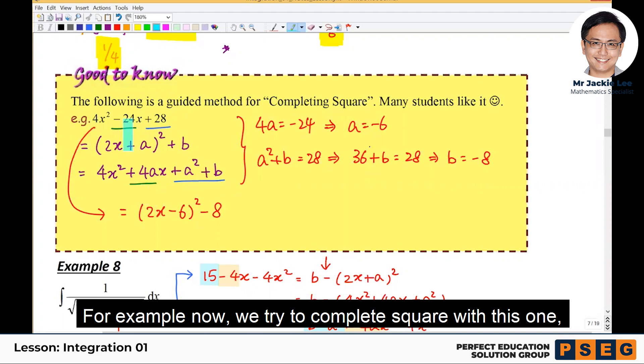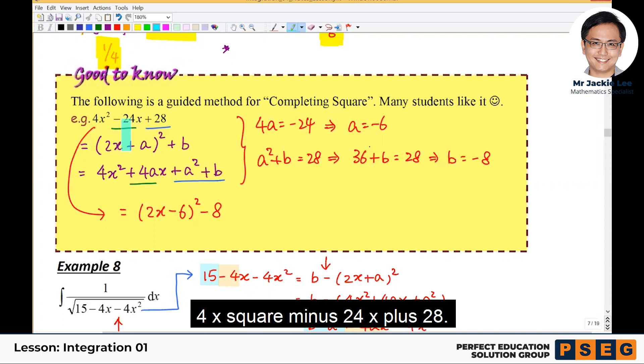For example, now we try to complete the square with this one: 4x square minus 24x plus 28.